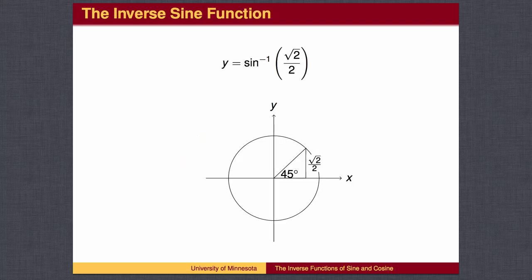This expression asks for the angle whose sine is the square root of 2 over 2. You may be tempted to say that 45 degrees is the angle whose sine is square root 2 over 2, but that is only partly correct. There are many angles whose sine is the square root of 2 over 2. For instance, 135 degrees.